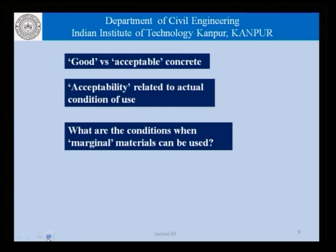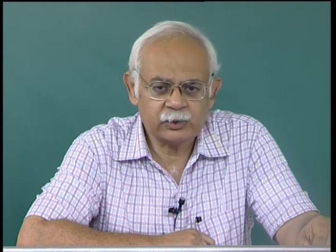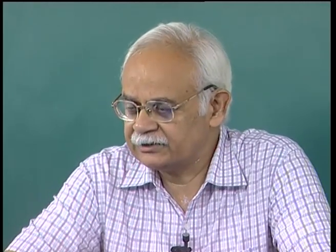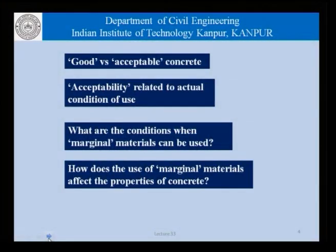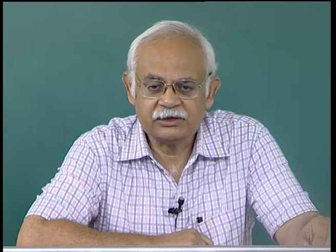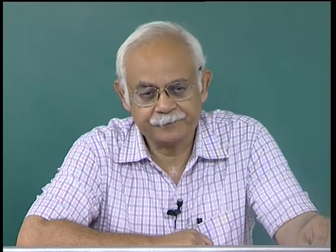Turning the situation the other way round, we must understand the conditions when marginal materials can be used. Marginal materials are those which do not qualify the tests normally used for identifying good quality material — whether it is coarse aggregate or sand that does not meet the requirements of good quality aggregate. How does the use of marginal materials affect the properties of concrete? In this course so far we have not talked of marginal materials, but in this lecture today we will.